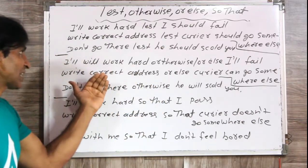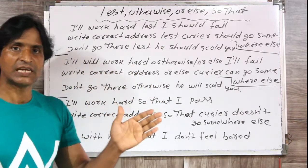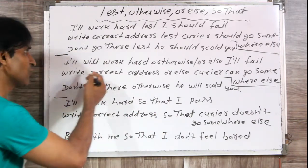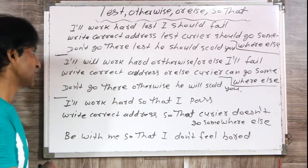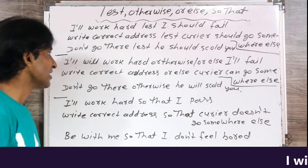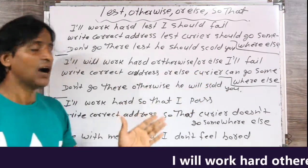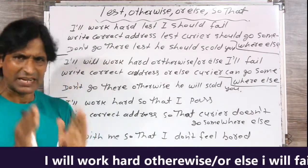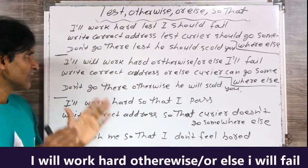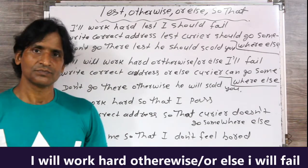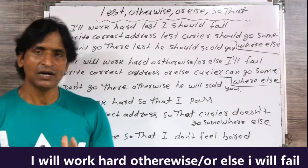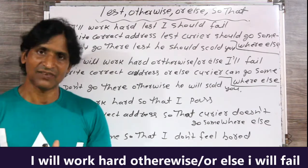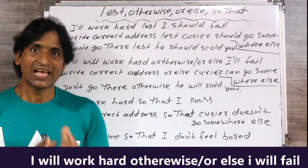Now the same sentences but expressed differently. In Hindi we say them differently, so in English we also construct them differently. 'I'll work hard, otherwise / or else, I'll fail.' Meaning: मैं कठिन मेहनत करूँगा, नहीं तो मैं फेल हो जाऊँगा. I'll work hard, otherwise (or else) I'll fail.